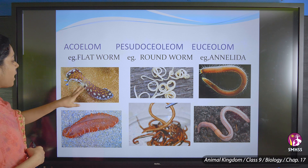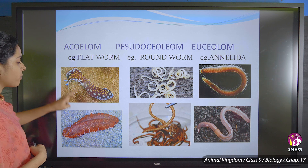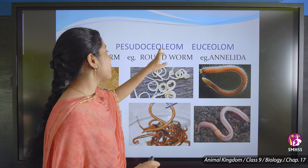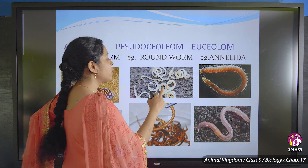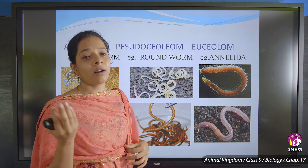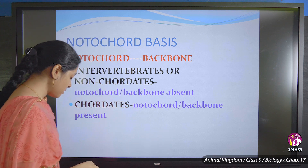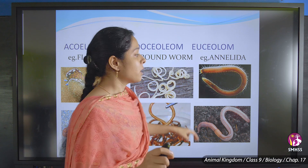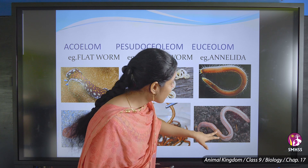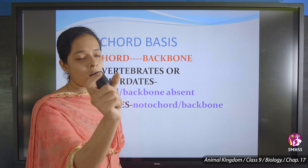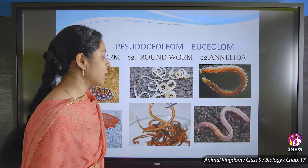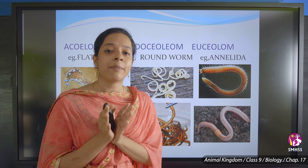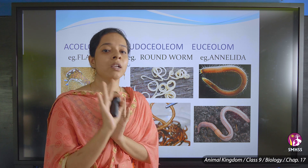For examples: a flatworm has no coelum — that is acoelomate. A roundworm appears round but does not have a true coelum — that is pseudocoelomate. The annelida worm contains a true coelum — that is eucoelomate. So there are three types: acoelomates, pseudocoelomates, and eucoelomates.